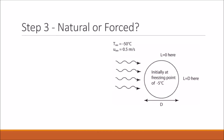Now we need to determine whether our flow is natural or forced. In this problem we have a velocity for our flow, and whenever we have a velocity we know that we're dealing with a forced convection problem.